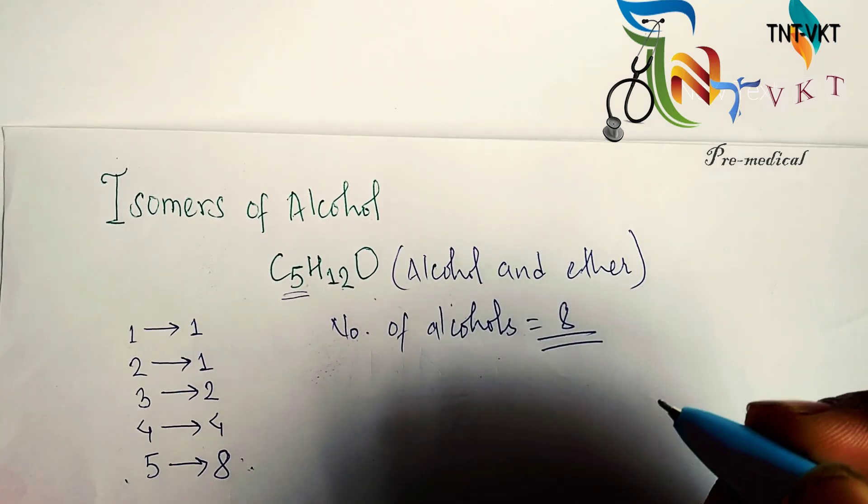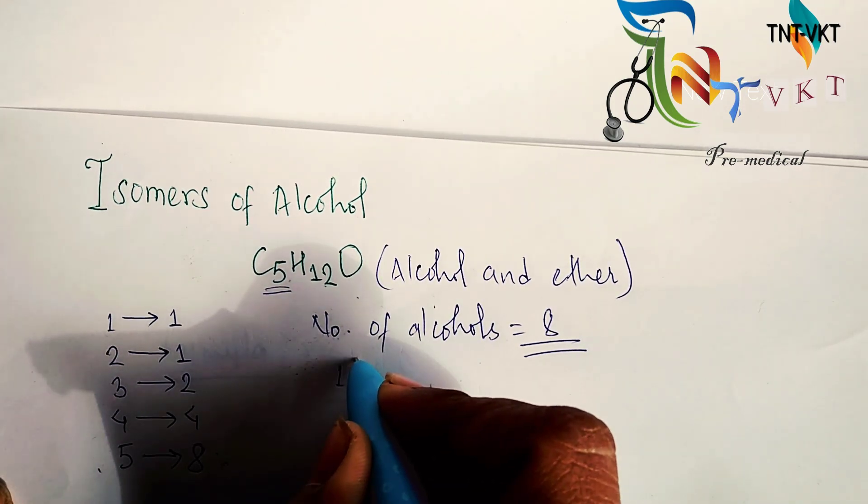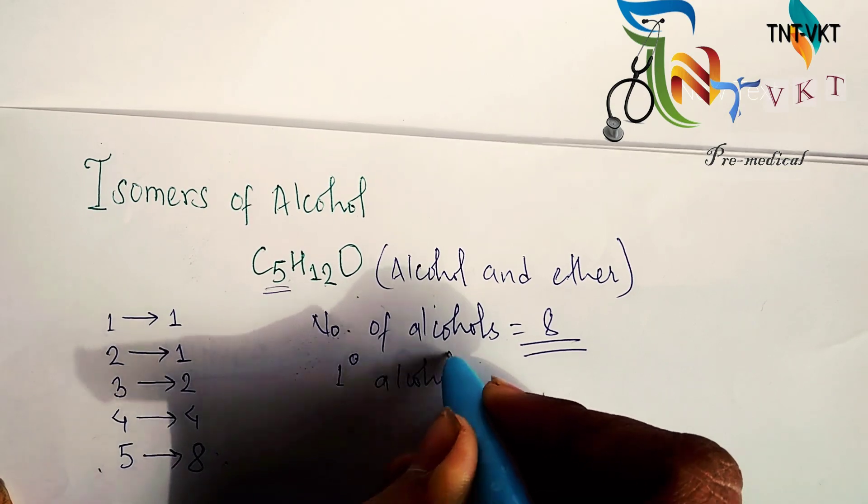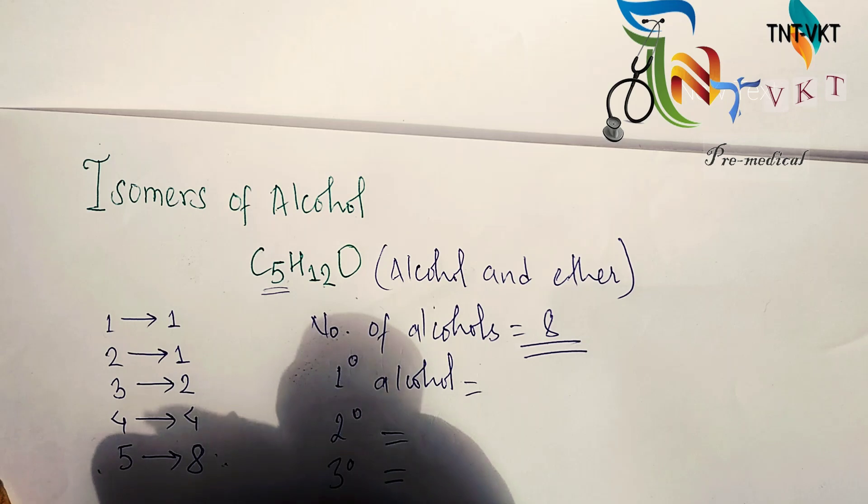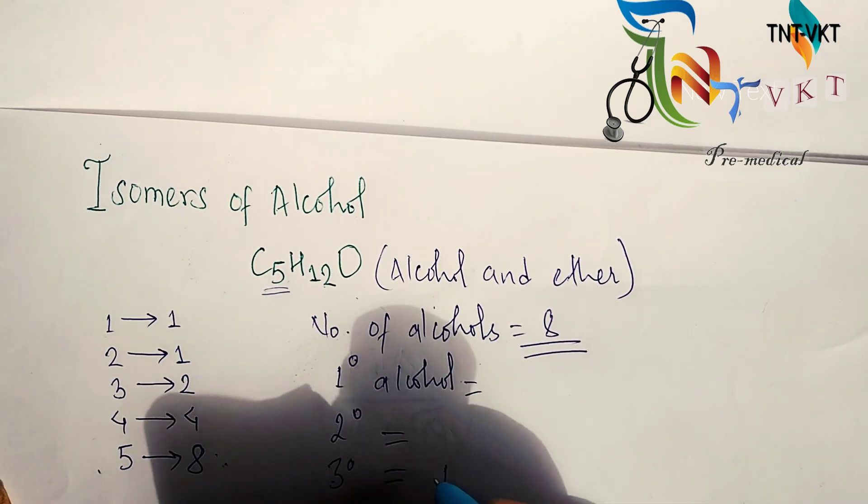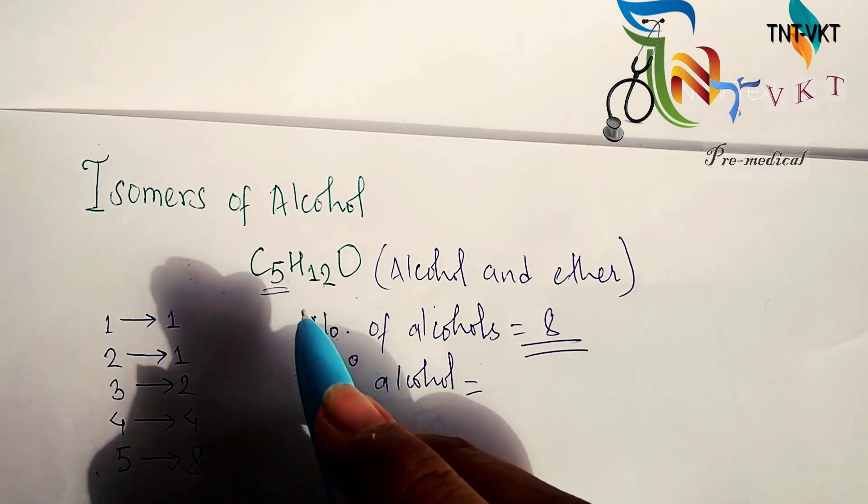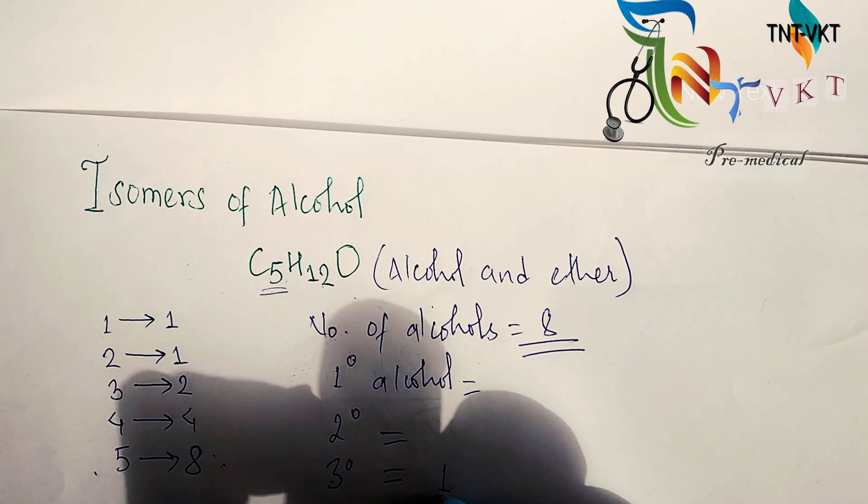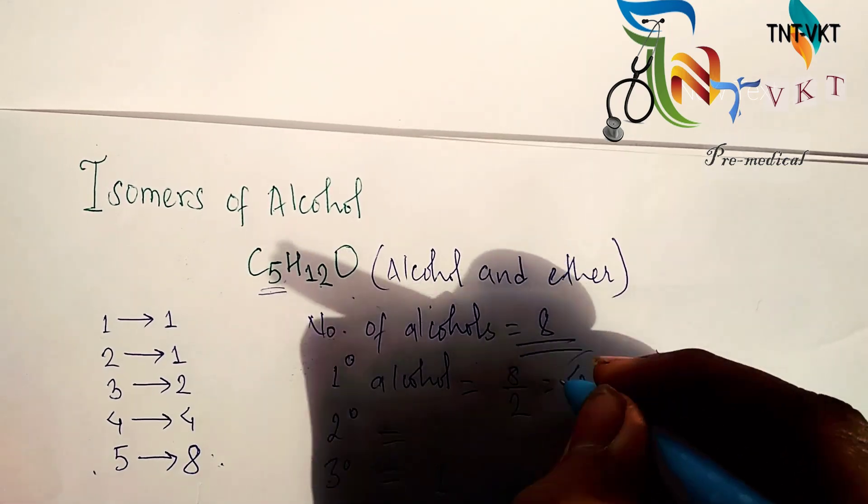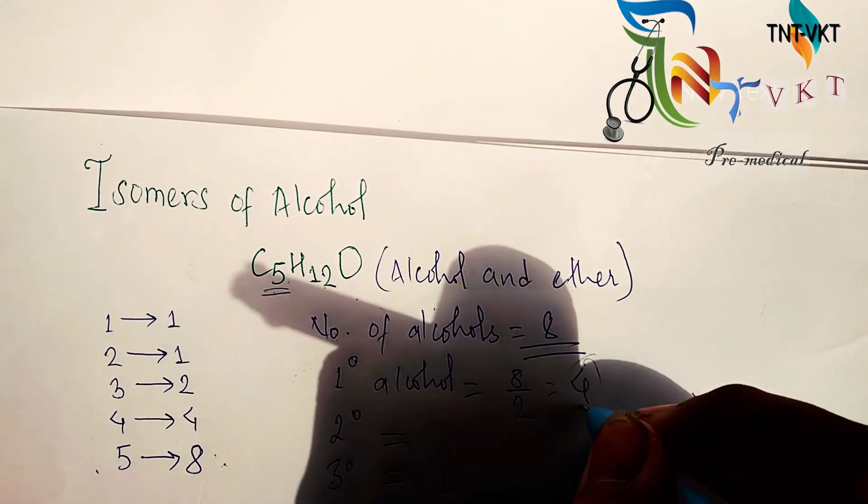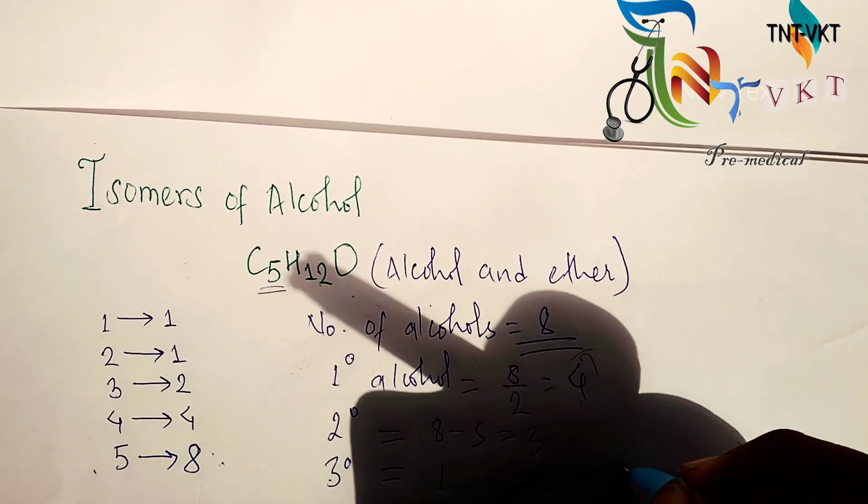Now to find out the number of primary, secondary, and tertiary alcohols. The number of tertiary alcohol is always 1 after carbon number 4. For primary alcohols, we divide the total number of alcohols by 2, which gives 4. Then 8 minus 4 plus 1 minus 5 gives 3 secondary alcohols. This is the required number of alcohols.